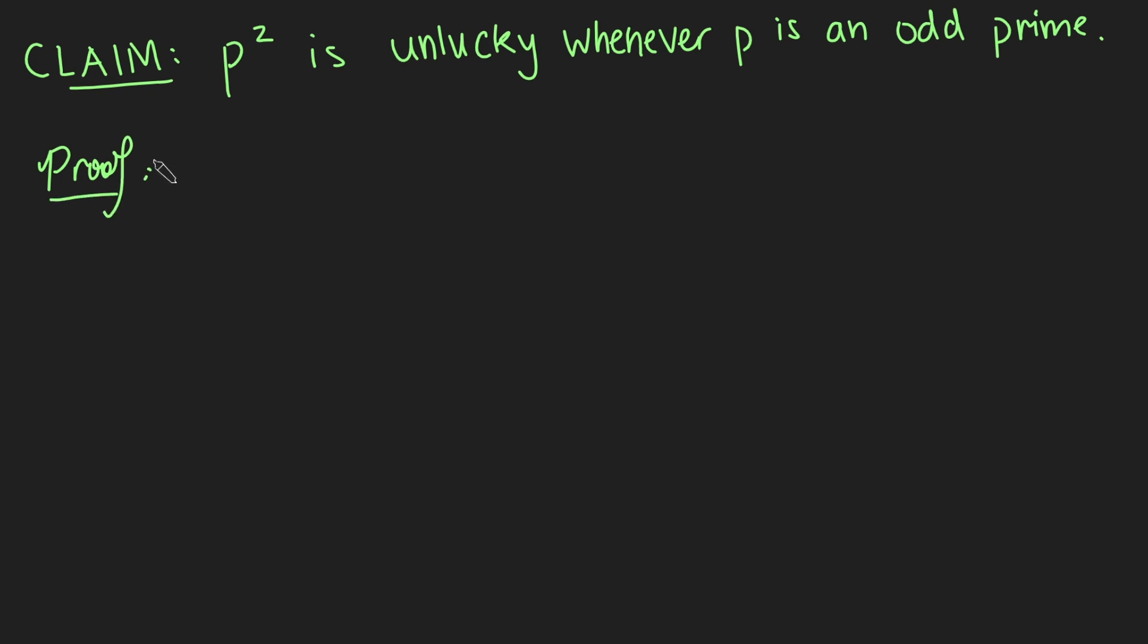And the way we're going to prove this is by contradiction. So I'm going to suppose for contradiction that p squared is not unlucky. And so therefore p squared can be written in the form m squared minus 1 over n squared minus 1. With a bit of cross multiplication, I get that p squared times n squared minus 1 equals m squared minus 1, which is just m plus 1 times m minus 1.